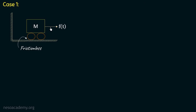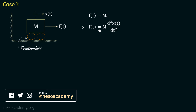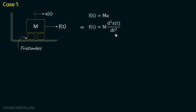If we apply a force f of t to the right hand side, this system will roll to the right due to the presence of wheels, so the fixed support is frictionless. There will be a displacement x of t to the right. The force equation is f of t equal to m multiplied with d squared x of t over dt squared. Applying Laplace transform gives f of s equal to m multiplied with s squared x of s.